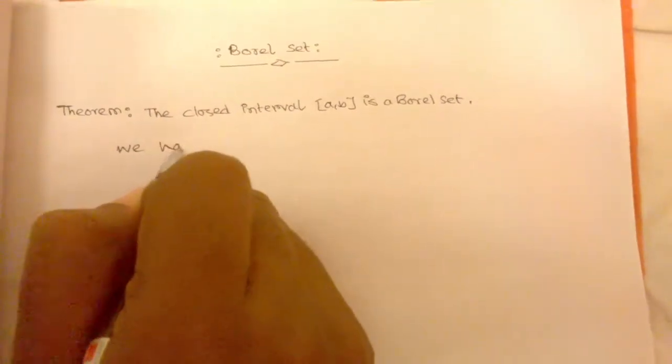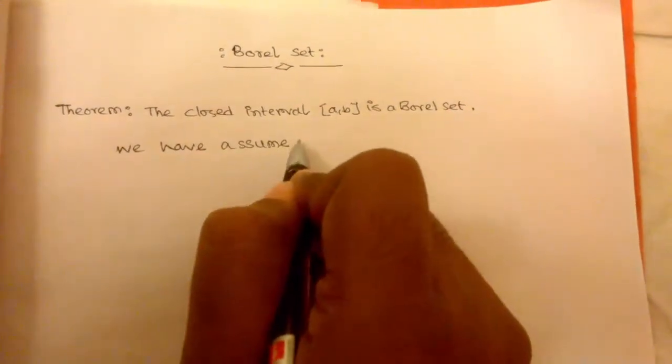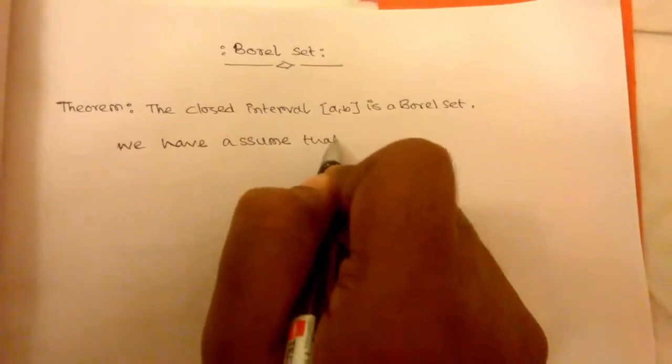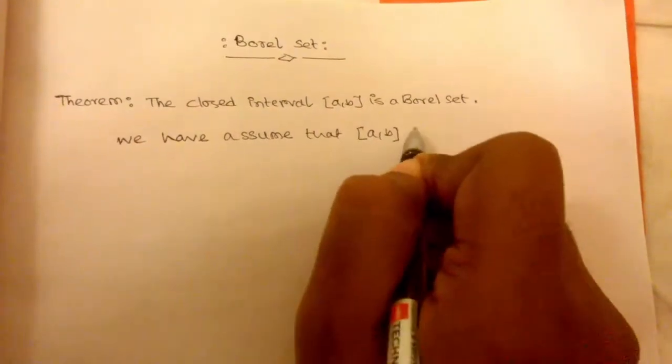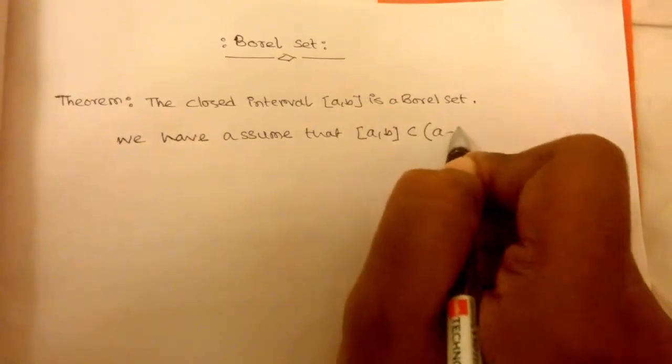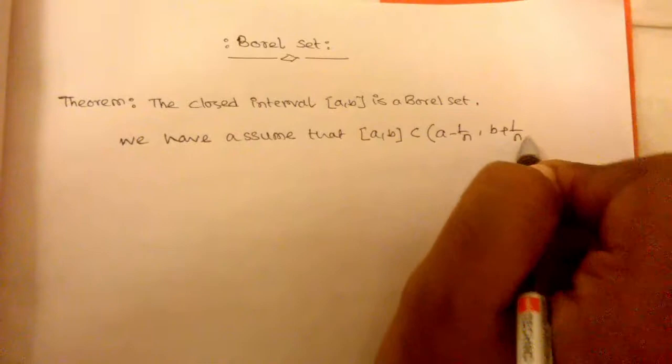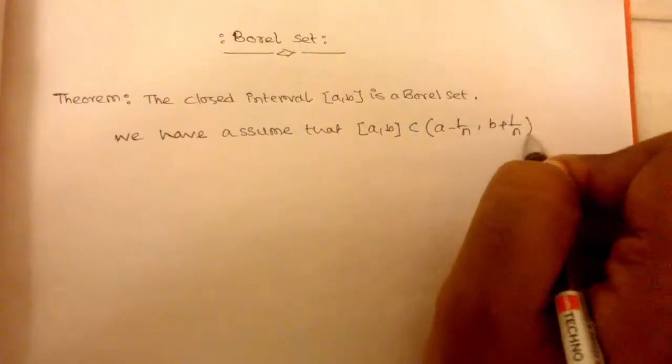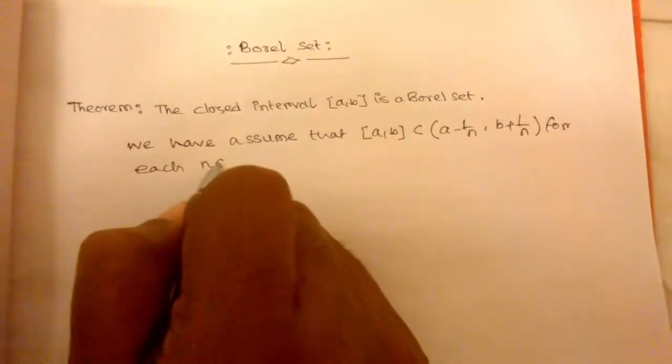We assume that the closed interval [a,b] can be written as (a - 1/n, b + 1/n) for each n belongs to the natural numbers.